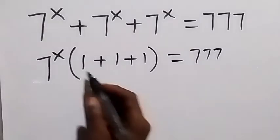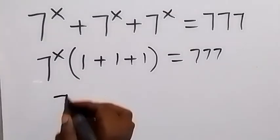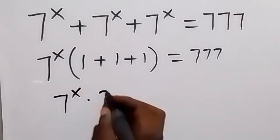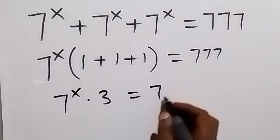Then from here, we add this together and that's 3. So we have 7 raised to the power x times 3 equals to 777.